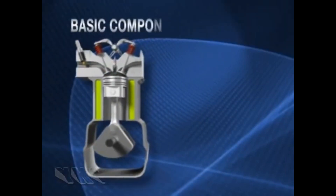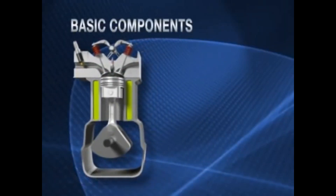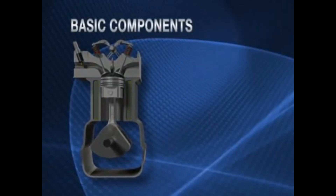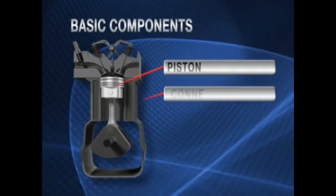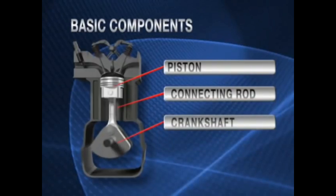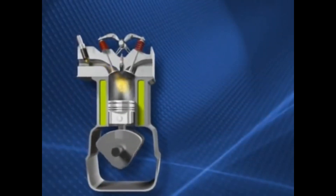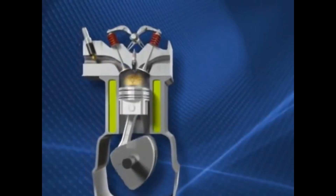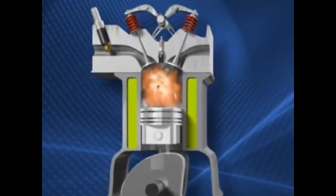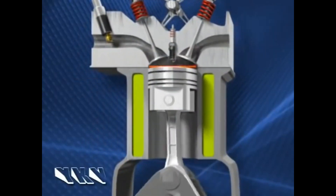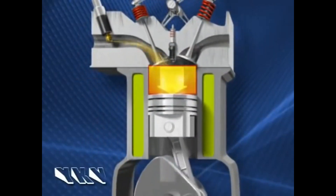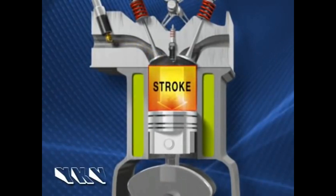Here are the basic components of every four-stroke gas engine: a piston, a connecting rod, and a crankshaft. As the piston travels up and down in the cylinder, this lateral motion is turned into a rotating motion at the crankshaft. The longer the stroke of the piston, the larger the displacement of gas and air that occurs in the cylinder.